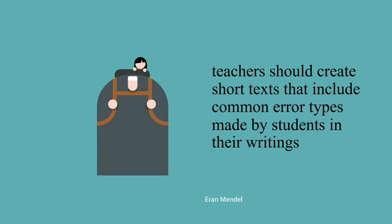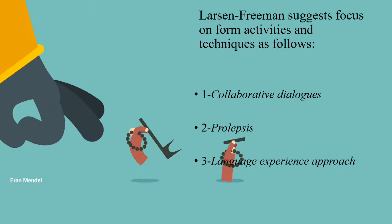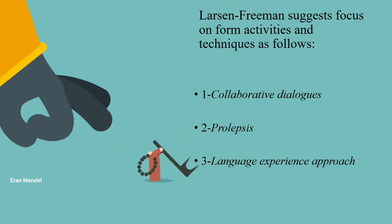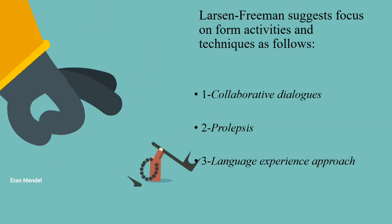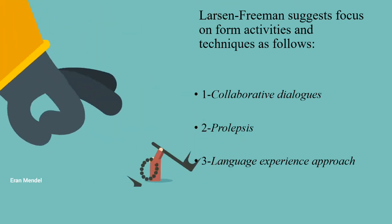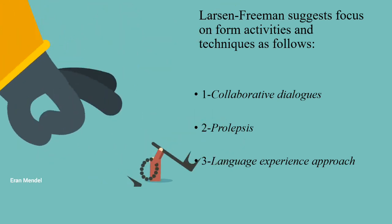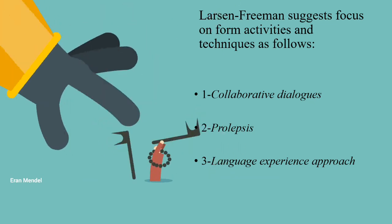Students can work together to edit more authentic texts, which helps them to correct their own work. Larson Freeman suggests focus on form activities and techniques as follows. First is collaborative dialogues — conversations in which students work together to discuss and use a new form, constructing a sentence together. Next is prolepsis, an instructional conversation that takes place between the teacher and the student, where the teacher coaches the student throughout the process of the task. The last is the language experience approach, a technique in which the learners dictate to the instructor in English something they would like to be able to say, and the instructor writes the student's message in correct grammatical English and gives it to the students.